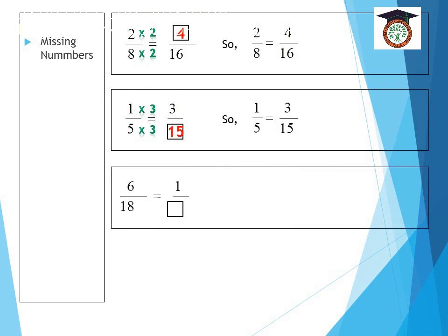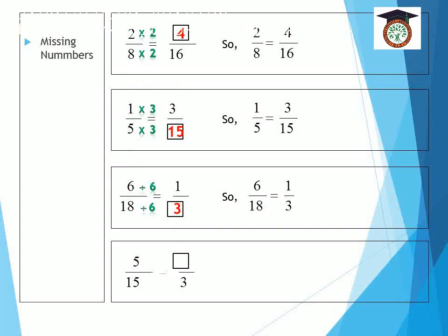Here in this example, the numbers from left to right are decreasing. That means I'm going to divide. So ask yourself, 6 divided by what is equal to 1? It's 6. Yes, 6 divided by 6 equals 1. So 18 divided by 6 is equal to 3. So 6 over 18 equals 1 third. Remember, what I do in the numerator, I will do in the denominator.